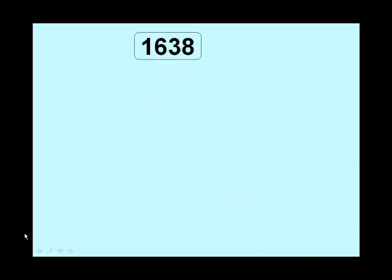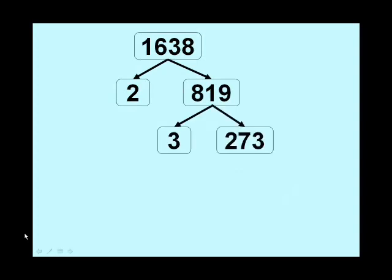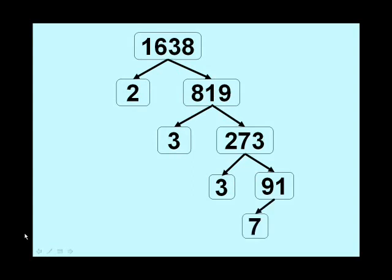The prime factors of the other number, 1638, again, divide by 2, you get 819, as we saw before. We know that can divide by 3. We know that can divide by 3. But now we make a concerted effort to find the factors of 91. That's tricky. It's actually in the 7 times table. So the red ones, again, 2, 3, 3, 7, and 13, are the prime factors. If you multiply those numbers together, they make 1638.